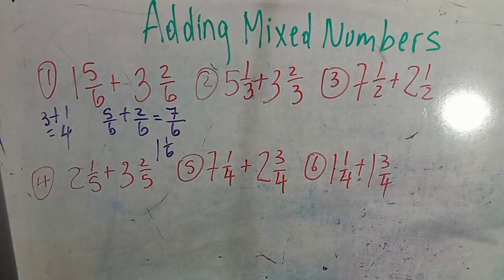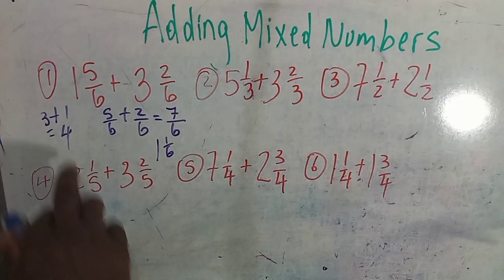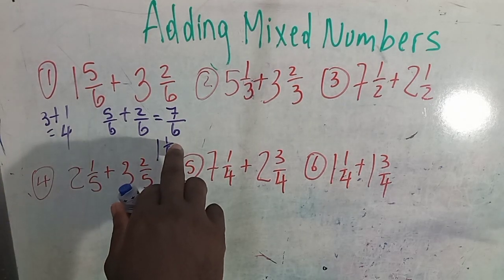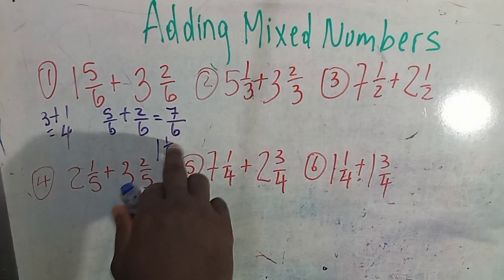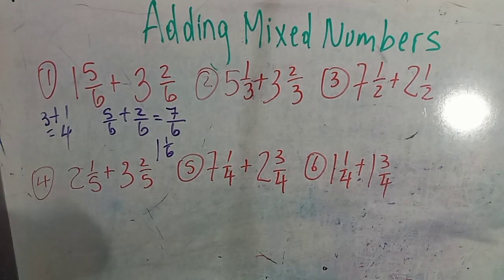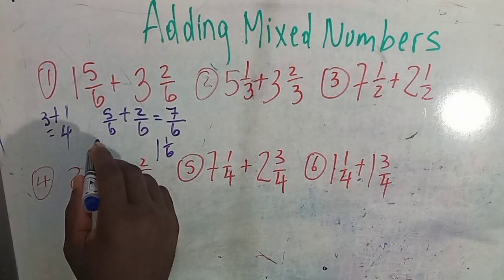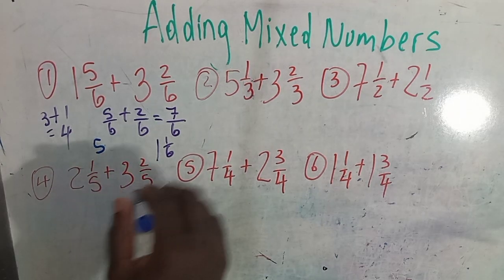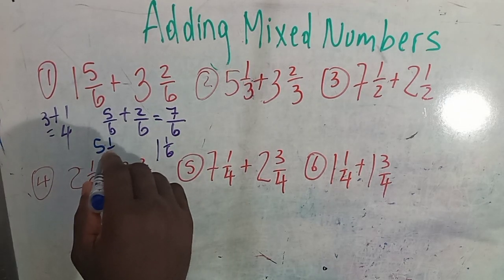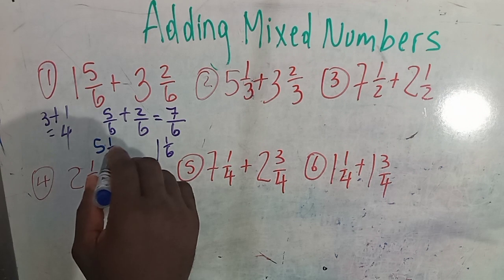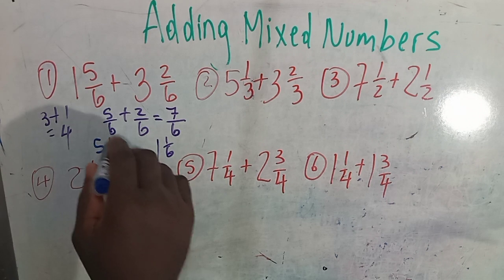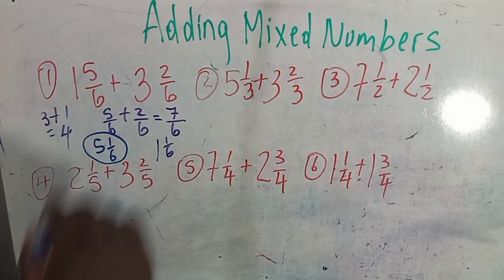So we're going to have our whole number and our mixed number here. 4 plus 1 gives you 5 and 1/6. And that is your answer.